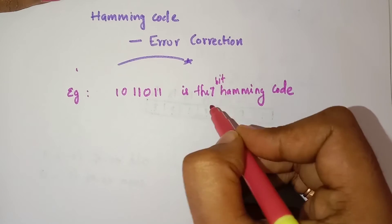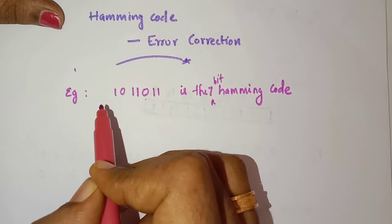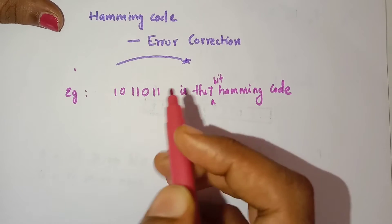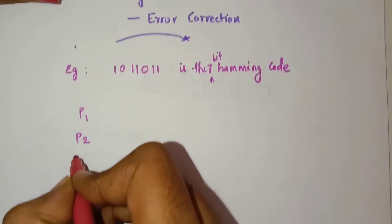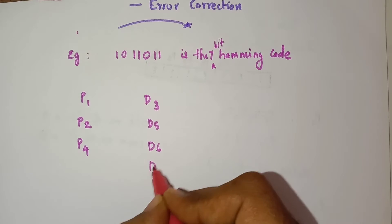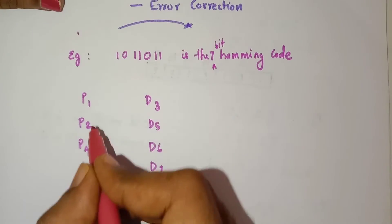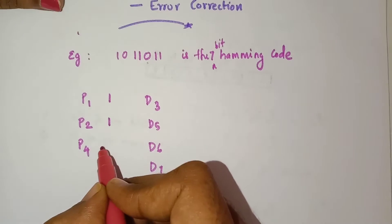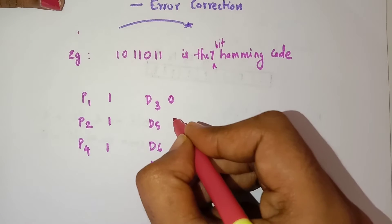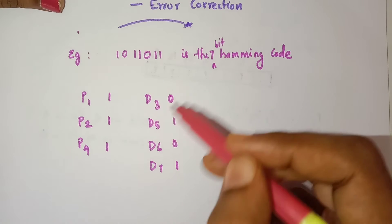For example, 1011011 is the 7-bit Hamming code that the receiver receives. That means 4 bits are data bits and 3 bits are parity bits. In 7-bit Hamming code, the parity bits are in positions P1, P2, and P4. Data bits are D3, D5, D6, and D7. So parity bits are: P1=1, P2=1, P4=1, and data bits are D3=0, D5=1, D6=0, D7=1. This is the arrangement of bits.